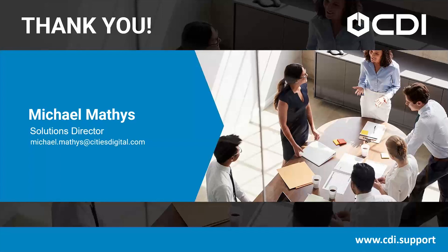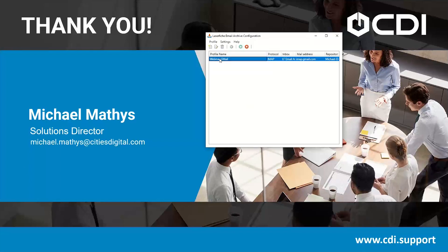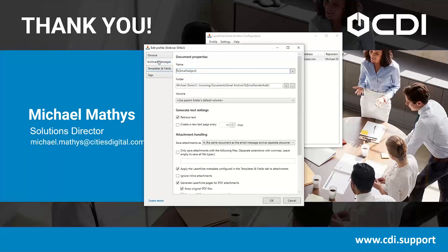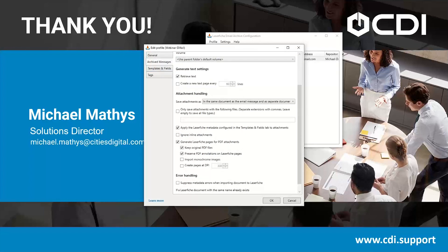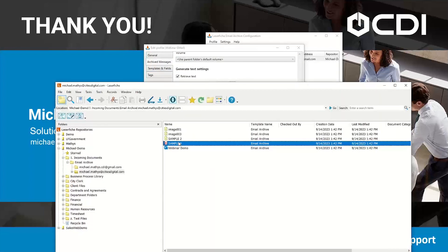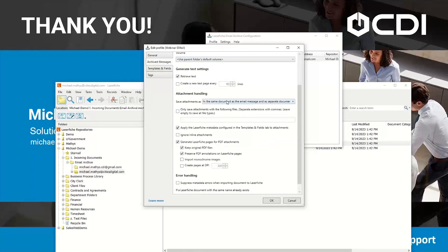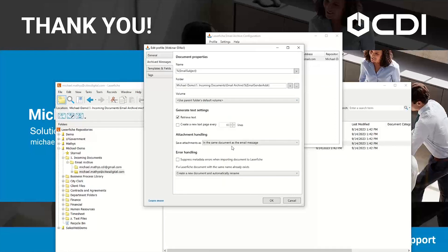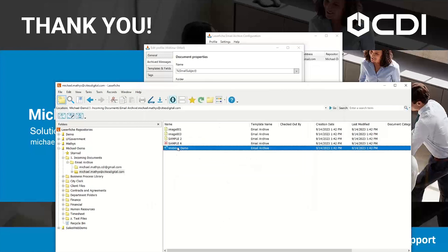We have a question: what is the best practice for importing an attachment as a separate file? That is really what we had seen during our webinar — where we get the separate documents for those attachments. If we were to leave the attachments in the same document as the email message, we would get only our email message and we wouldn't have any of our attachments as separate files.